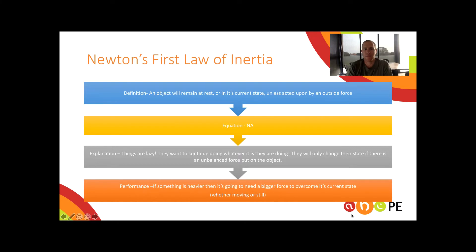Now we get to the heart of it — the explanation. For those of you looking for the better marks, you're going to have to demonstrate that you know the principle well enough to explain it in whatever circumstances you're presented with. For Newton's first law, a simple explanation to help you remember is that things are lazy. They want to continue doing whatever it is they were doing, and they'll only change their state if acted upon by an unbalanced force — usually a person, a golf club, a cricket bat, or whatever it might be.